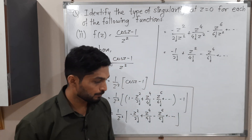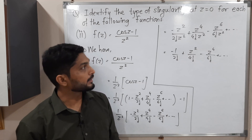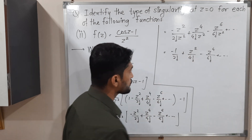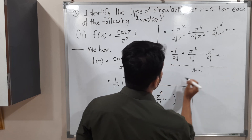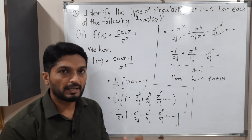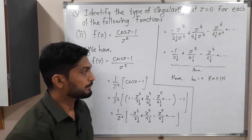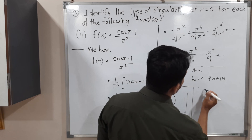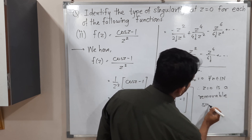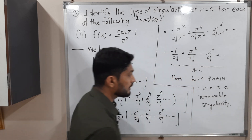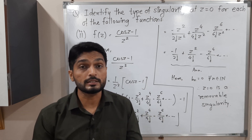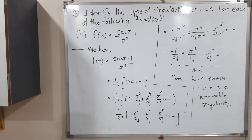So tell me what is the principal part and analytic part. The principal part means z appears in the denominator. But see, there is no term with z or any power of z in the denominator — all terms have z in the numerator. So this is entirely the analytic part. All b_n's are zero. Since all b_n's — the coefficients of 1/z in the principal part — are zero, therefore Z is equal to 0 is a removable singularity. We have already seen: if the principal part is zero, with no terms in the principal part, then we say Z is equal to z₀ is a removable singularity.